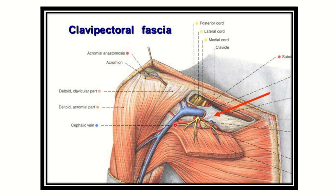In this picture, here is another clear view — this is the cephalic vein. It goes upwards and pierces this structure, which is the clavipectoral fascia. The whitish structure is the clavipectoral fascia, and the cephalic vein pierces it and terminates into the axillary vein.